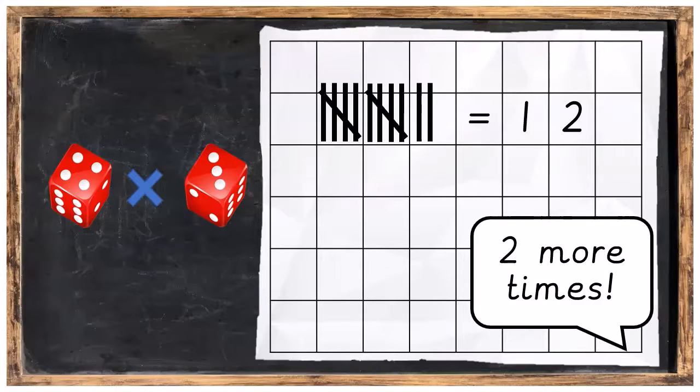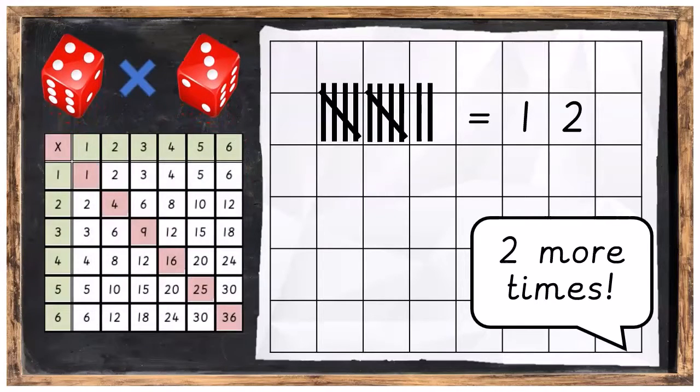Great. I'd like you to do that two more times now. By rolling the dice and then multiplying the two numbers together. You can use this multiplication square to help you.